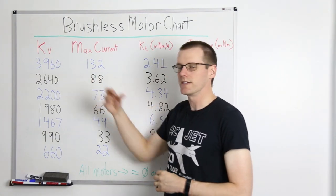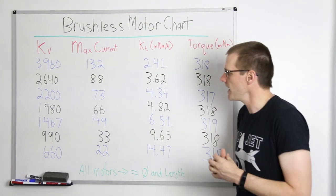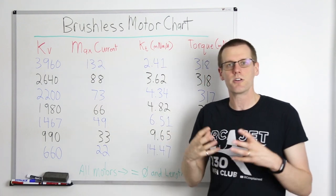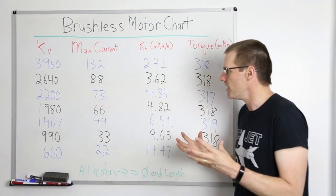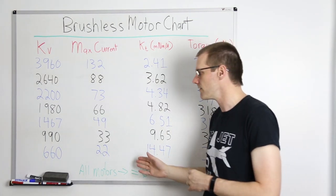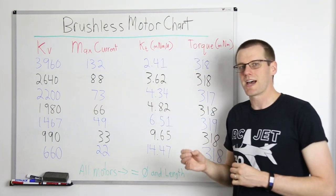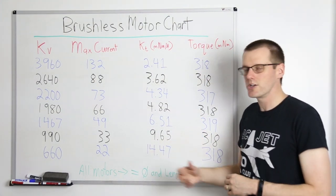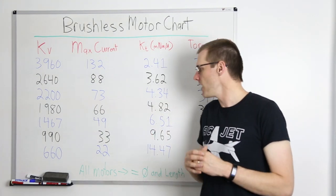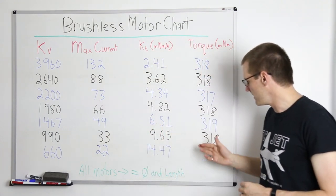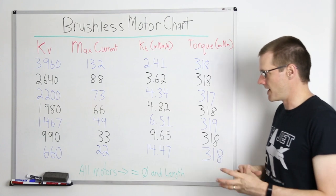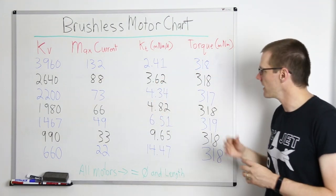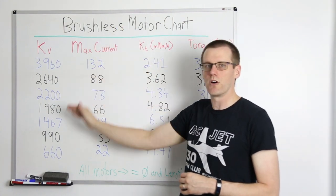If you have the 3960 KV motor and think dropping to the 660 KV motor will give you more torque, the problem is you had potential to deliver 132 amps to the high KV motor, but now you're limited to only 22 amps with the low KV motor in the same size classification. The low KV motor gives more torque per amp, but because amps are so low, you get the exact same torque output — 318 — as the 3960 KV motor.